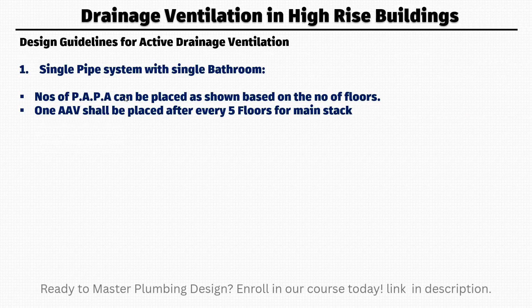These are design guidelines for active drainage ventilation. There can be two cases: one is for a single pipe system and one is for a dual pipe system. For the single pipe system, for example for a single bathroom, the number of positive air pressure attenuators can be placed as shown.